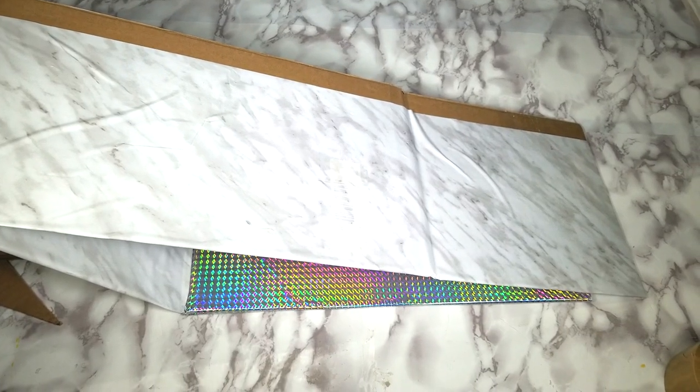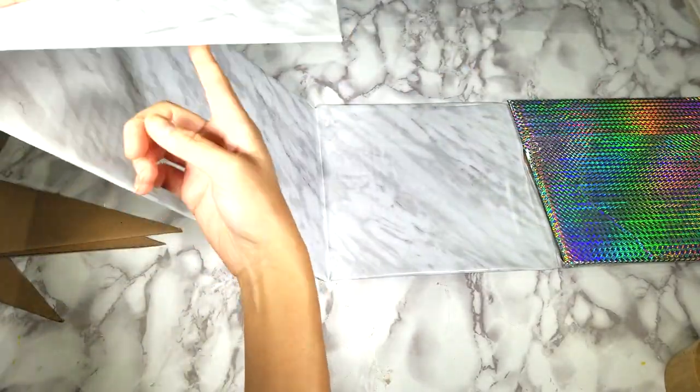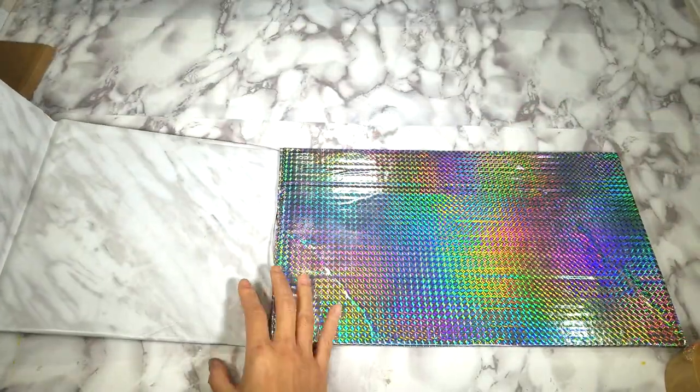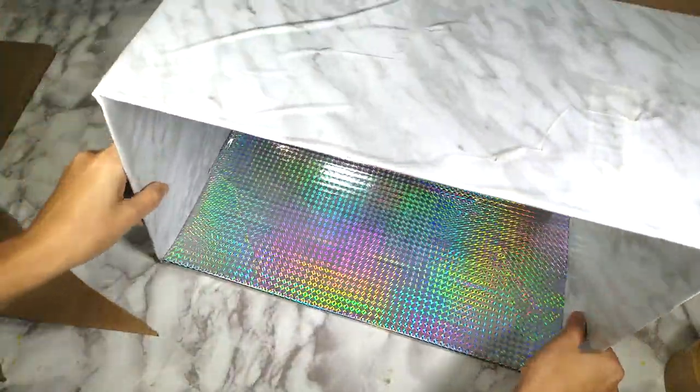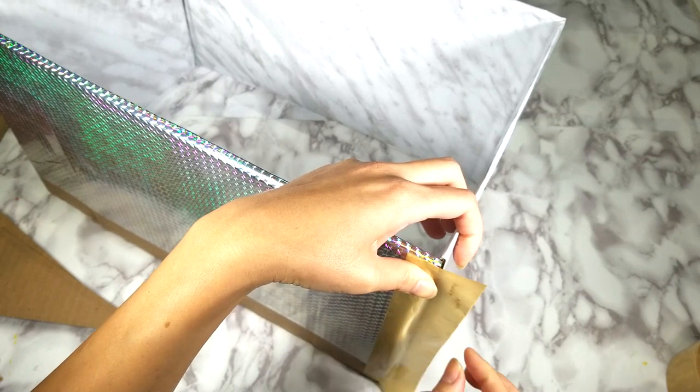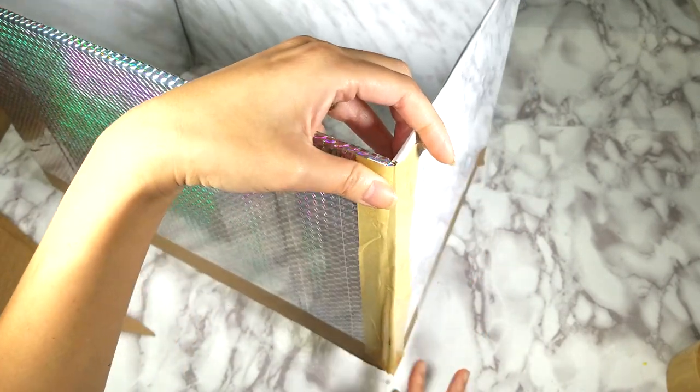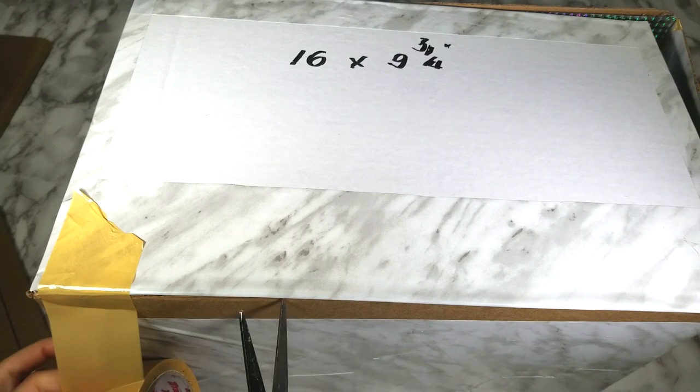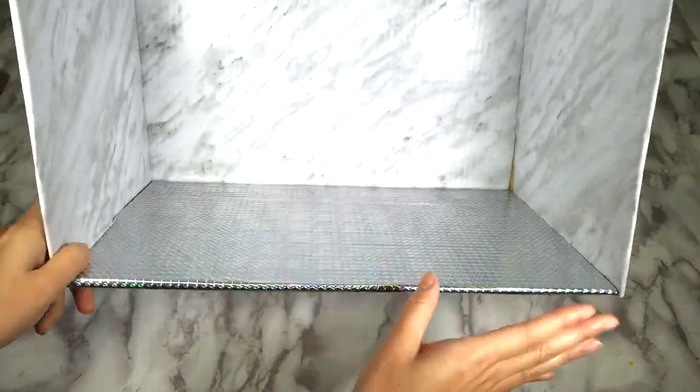My daughter also wanted something sparkly so I use the sparkly contact paper to cover the floor part. For the wall and the ceiling I just use that marble contact paper and cover it around. I'm leaving the exterior for later. Then I use packing tape to tape the outside of the frame together. I also use packing tape to tape all around the back as well so the backs will be attached together to the frame. That's how it looks like from the inside with a sparkly floor.